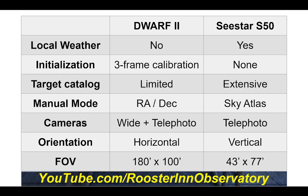The Moon and Sun are both about 30 arcminutes, so they fit very comfortably with the Sea Star and with room to spare with the Dwarf. Field of view, in my mind, is not a big consideration of goodness — there are large targets like Andromeda where the Dwarf 2 does much better, and many smaller targets like the Dumbbell and Ring Nebulae where the Sea Star does a little better.